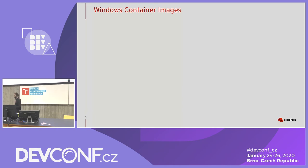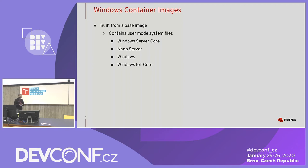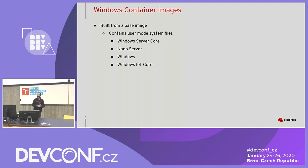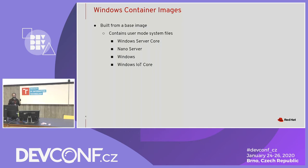You might wonder why I'm talking about a kernel when it comes to a container image. To explain that, let's start with what Microsoft decided to do to help application developers containerize their software. They gave developers a set of base images, because Windows applications depend on a whole bunch of user mode APIs. Everything required to run your application is not provided just by the kernel, like in the monolithic Linux kernel — the Windows kernel is split into pieces, with a kernel DLL and many other services provided by user mode DLLs.